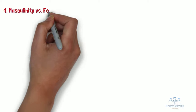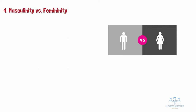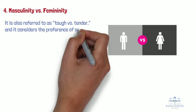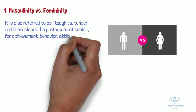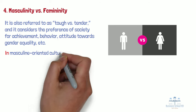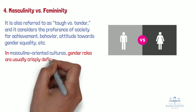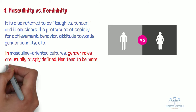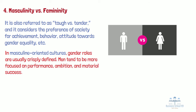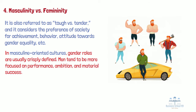Number 4: Masculinity vs. Femininity. This dimension is also referred to as tough vs. tender, and it considers the preference of society for achievement, behavior, and attitude towards gender equality. In masculine-oriented cultures, gender roles are usually crisply defined. Men tend to be more focused on performance, ambition, and material success. They maintain tough and independent personas while women cultivate modesty and quality of life. Areas like Japan and Latin America are examples of masculine-oriented cultures.